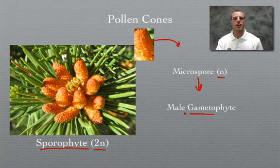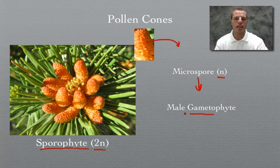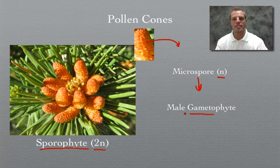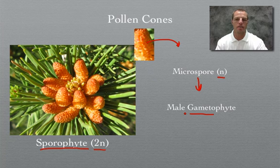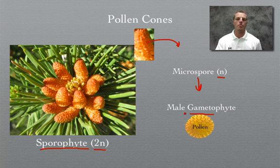Gametes are sex cells. We know sperm is a male sex cell and the egg is the female sex cell in humans and animals. The gametophyte is the male sex cell within these gymnosperms — and for this gymnosperm, that is pollen. So pollen is going to be our male gametophyte.